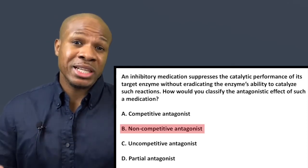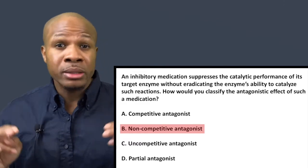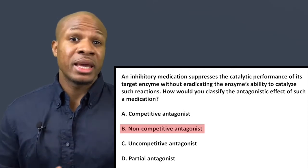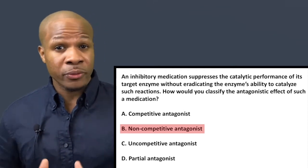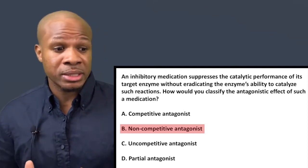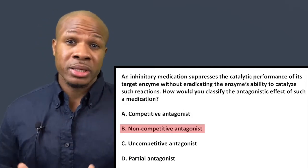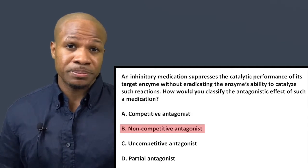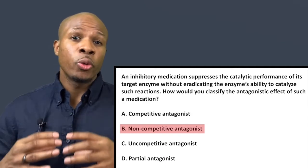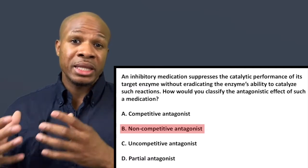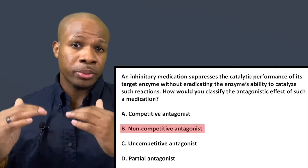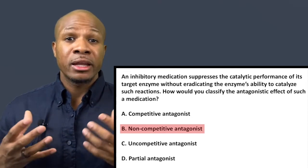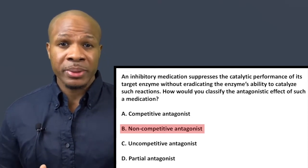Answer choice B says non-competitive antagonist — this is the right answer. A non-competitive antagonist binds to the enzyme and causes it to weaken and not operate to its full potential. Answer choice C, uncompetitive antagonist, is not correct because an uncompetitive antagonist completely suppresses the activity of the enzyme, and it does so when the enzyme is already bound to its substrate. A non-competitive antagonist merely suppresses — it doesn't completely deactivate the enzyme's activity.